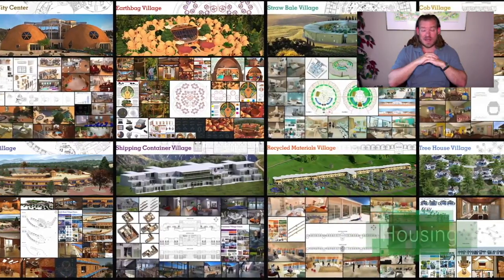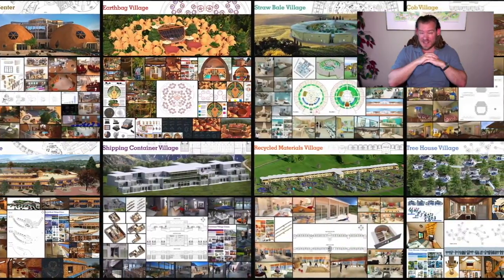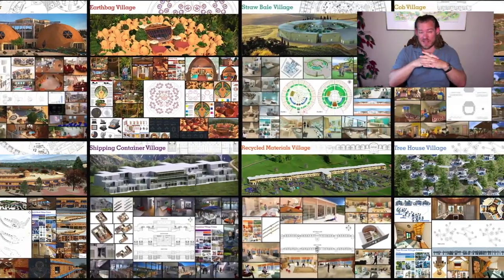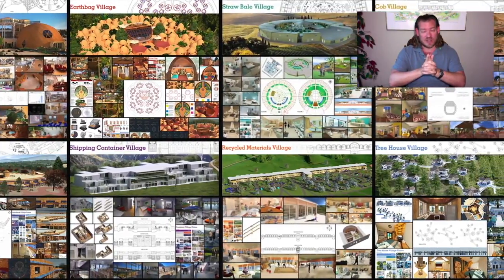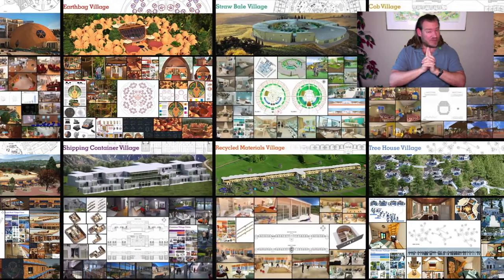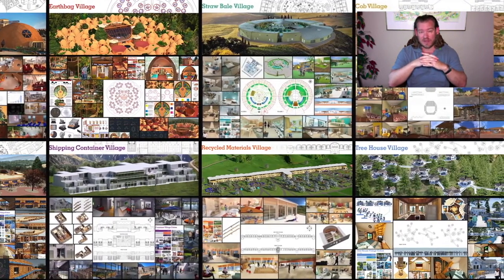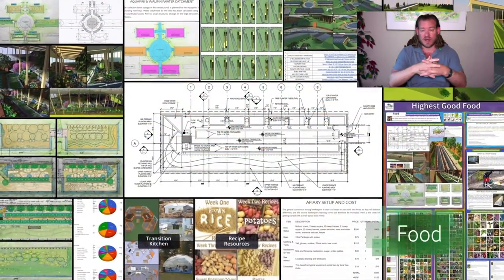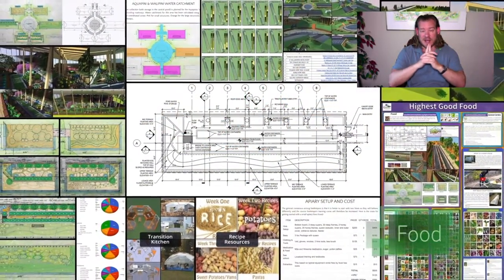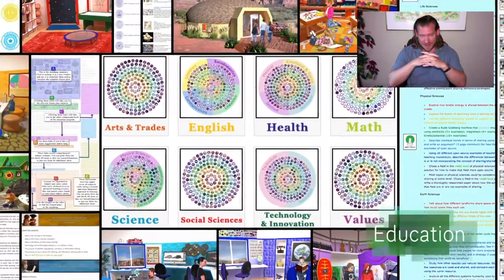One Community is bringing together the people with the consciousness and the desire for the highest good of all life on this planet to build sustainable, regenerative, and self-replicating teacher demonstration hubs as a pathway to global sustainability. This is our August 15th, 2021 edition of our Weekly Progress Update and today's topic is Human Sustainable Ecosystem Design.